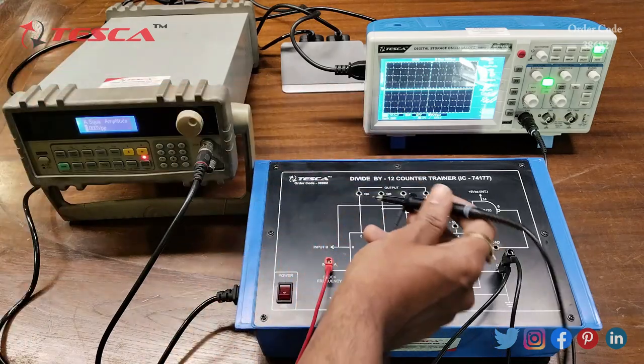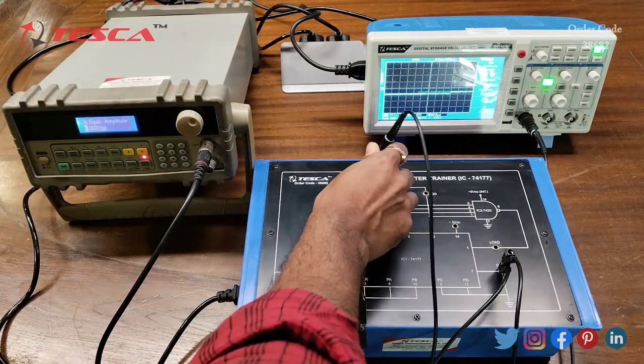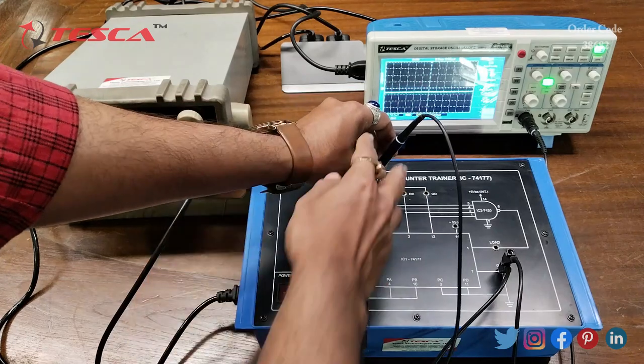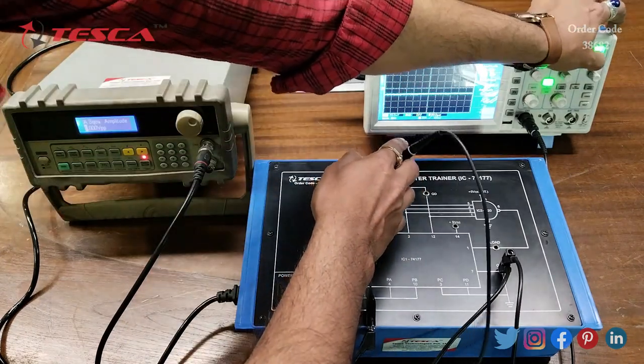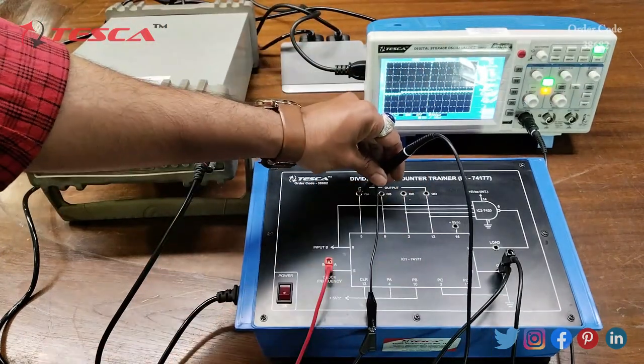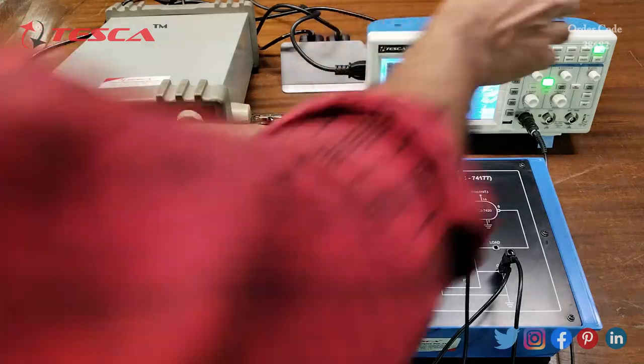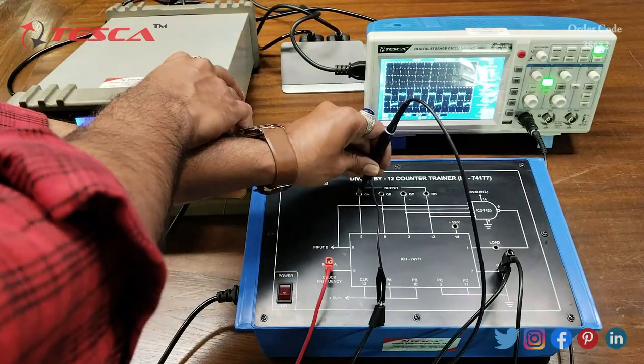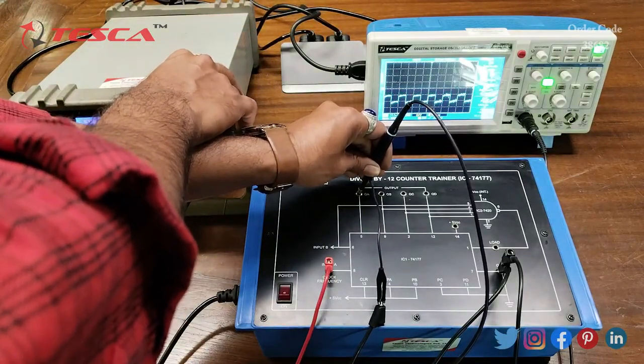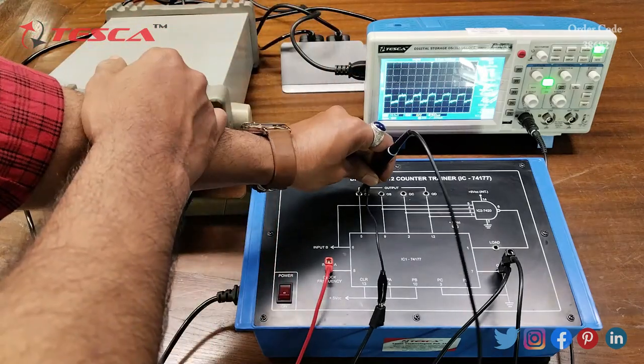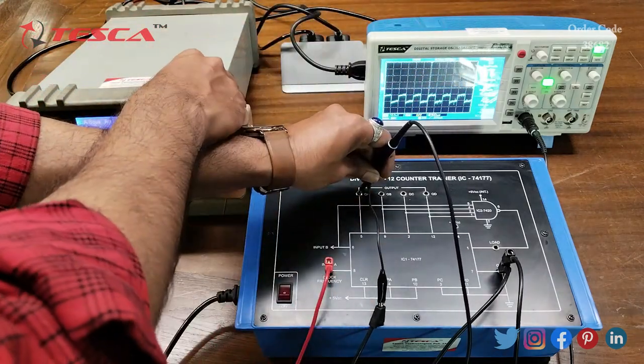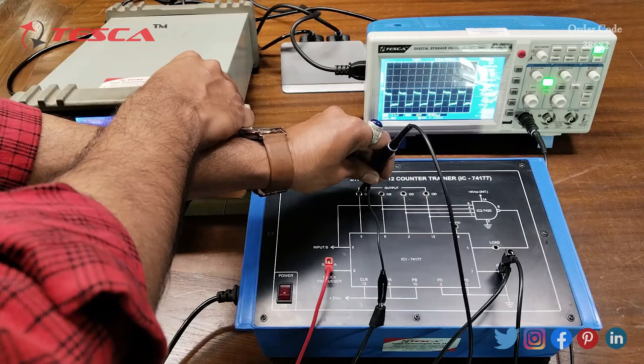Here on the DSO you can observe the square wave. This is the square wave which we are getting on the QA output.